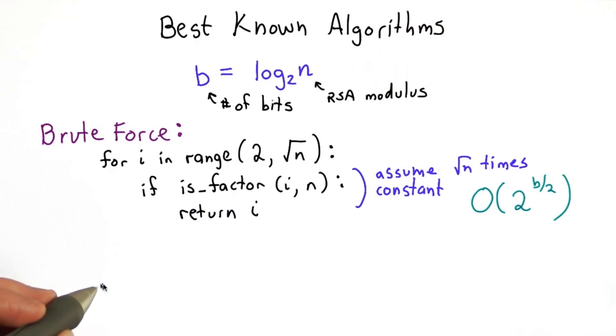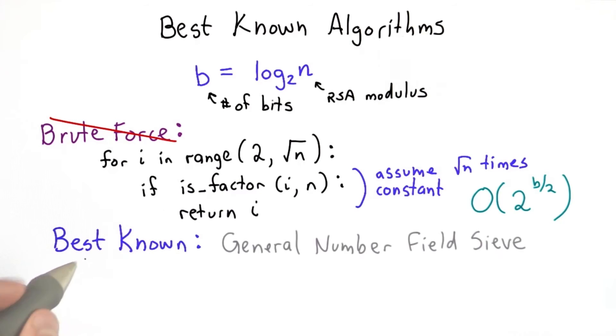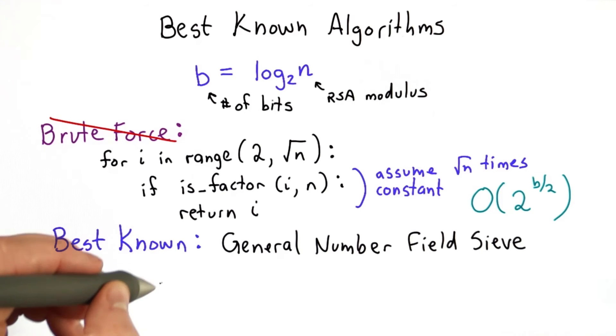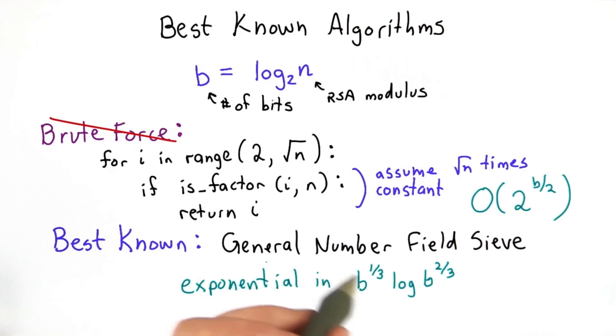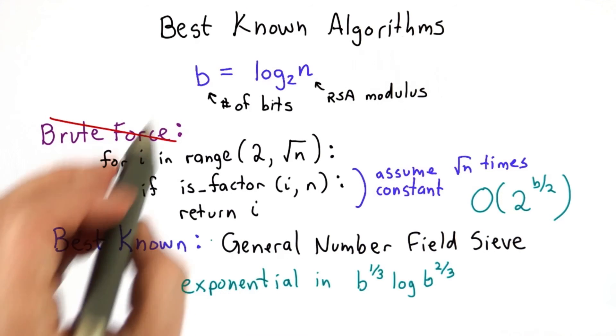But this is not the best known factoring algorithm. The fastest known factoring algorithm, as of 2012 when I'm recording this, is what's known as the general number field sieve. And this is a little bit faster than the brute force, but it still essentially requires trying all possibilities. So its running time is exponential in B to the 1 third log B to the 2 thirds, which is still much worse than being polynomial.